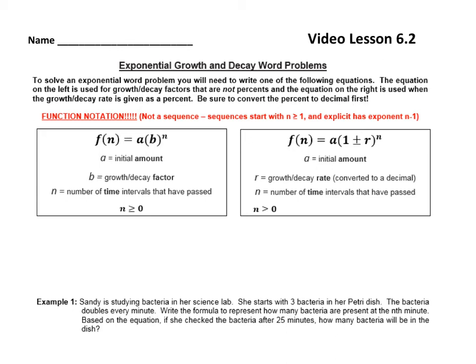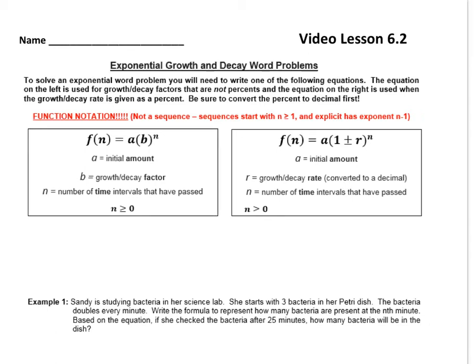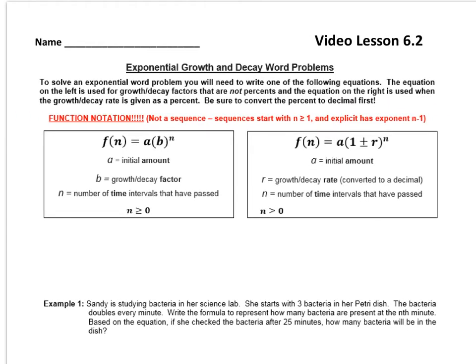Okay, so so far, the only kinds of exponential equations we've written are this type here, where the a is the initial amount, or the y-intercept, and the b number is that growth or decay factor. And n is the number of times the interval has passed, whether it's days or minutes or years.